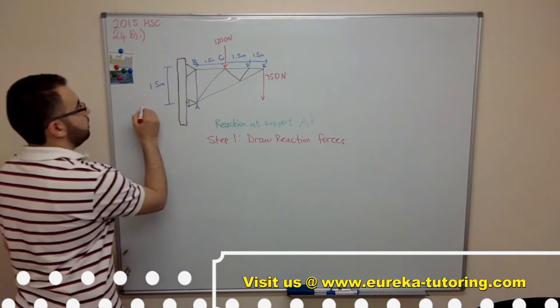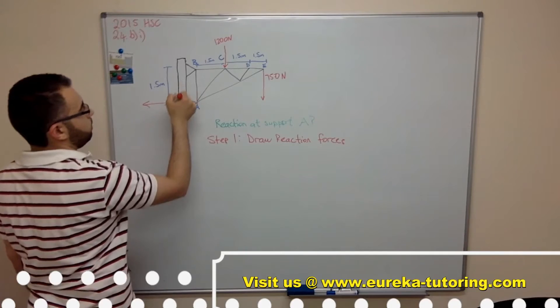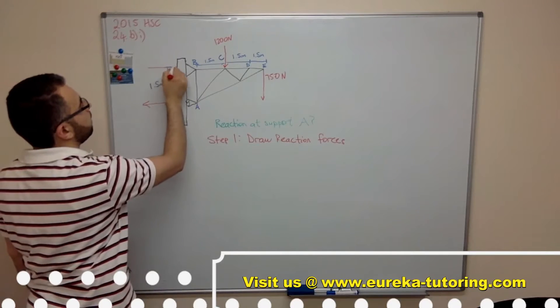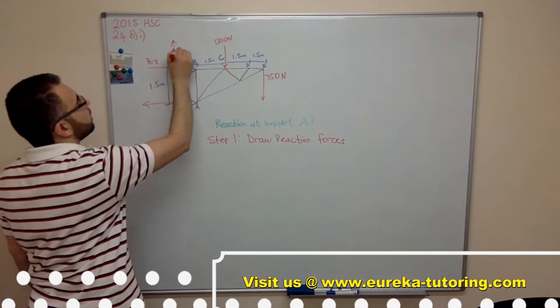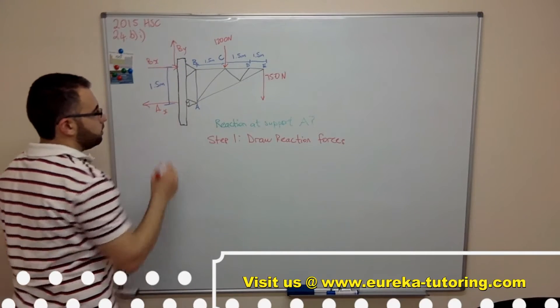So there's one that's perpendicular to the surface of the roller joint and there's the two forces at B: Ax, Bx, and By.